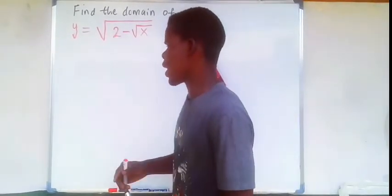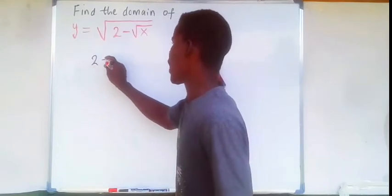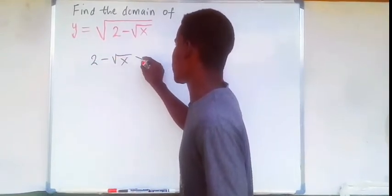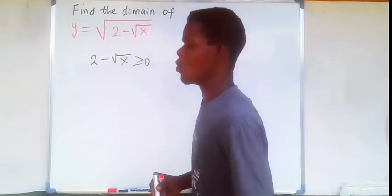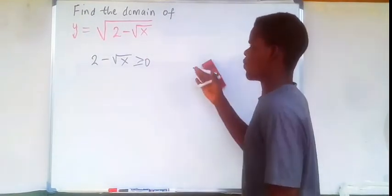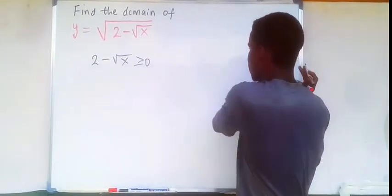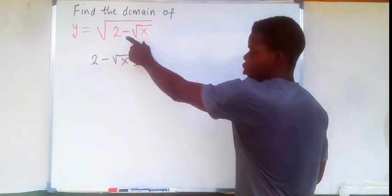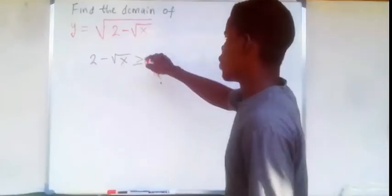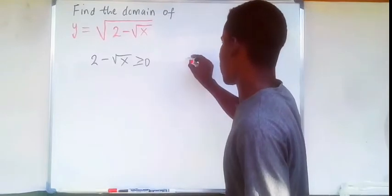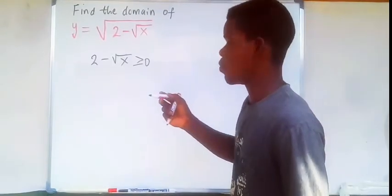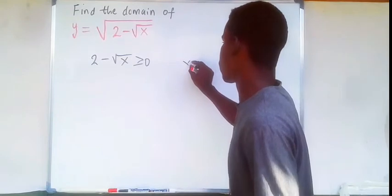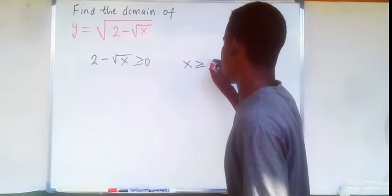Because of that, we set 2 minus the square root of x greater than or equal to 0, so that the outer square root is defined. Additionally, the inner square root of x must also exist, meaning x must be greater than or equal to 0.